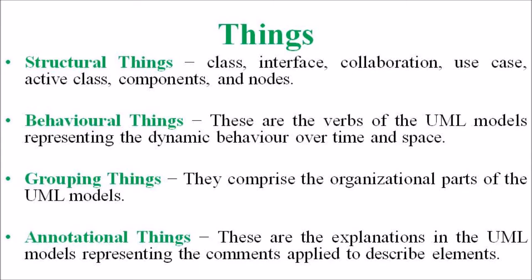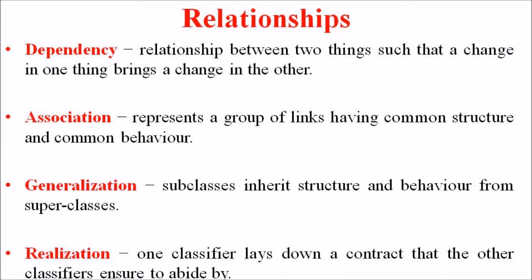Next we are discussing relationships. Relationships are the connections between things. The four types of relationships in UML are Dependency, Association, Generalization and Realization. Dependency is a semantic relationship between two things such that a change in one brings a change in the other — the former is independent while the latter is dependent. Association is a structural relationship representing a group of links having common structure and behavior. Generalization represents a generalized or specialized relationship in which a subclass inherits structure and behavior from the superclass. Realization is a semantic relationship between two or more classifiers such that one classifier lays down a contract that the other ensures to abide by.